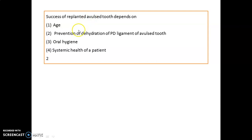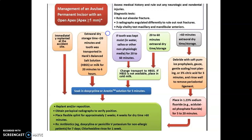Success of re-implanted avulsed teeth depends on prevention of dehydration of the periodontal ligament. For management of an avulsed tooth with open apex: if extra-oral time is less than 60 minutes, treatment differs from more than 60 minutes. If more than 60 minutes, debride with soft pumice, remove PDL cells from the root surface, then place in sodium fluoride for 5 to 20 minutes to avoid external resorption. If between 20 to 60 minutes, store in HBSS (Hanks Balanced Salt Solution) or milk.